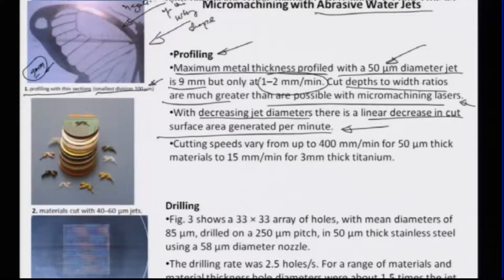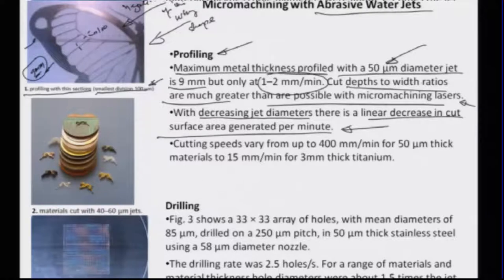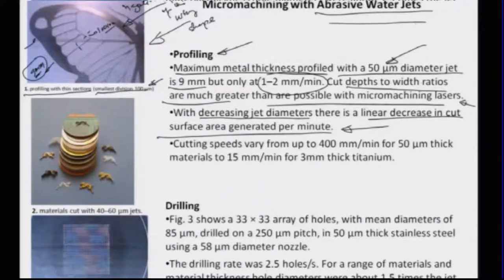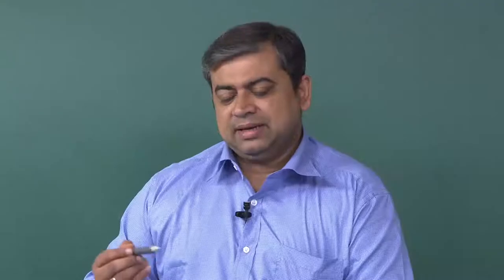Therefore, the high aspect ratio — on one side a thickness of 9 mm, and on the other side features of not more than 100 microns — is quite remarkable. This kind of high aspect ratio cannot be easily obtained on any other machining process except abrasive water jet. That is the power of this process in being able to micro-size the parts.